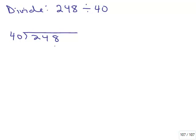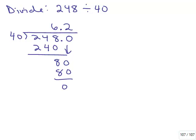And that gives you 240, and then there's a remainder, so I'm going to put .0 to bring down the zero, and 40 goes into 80 twice. Remember, the decimal point then goes right here. So the answer here is 6.2.